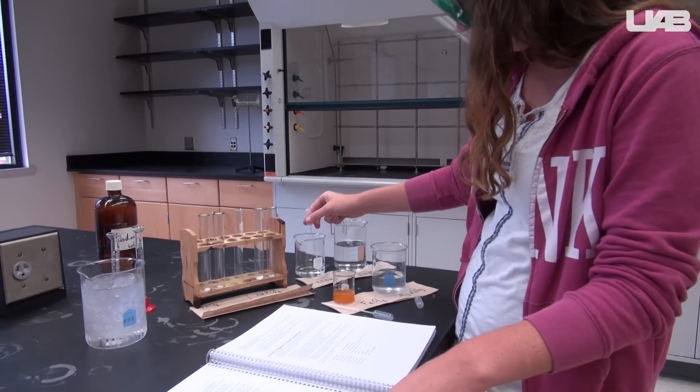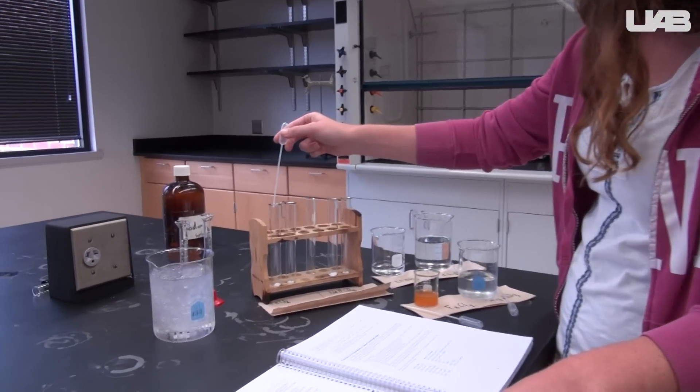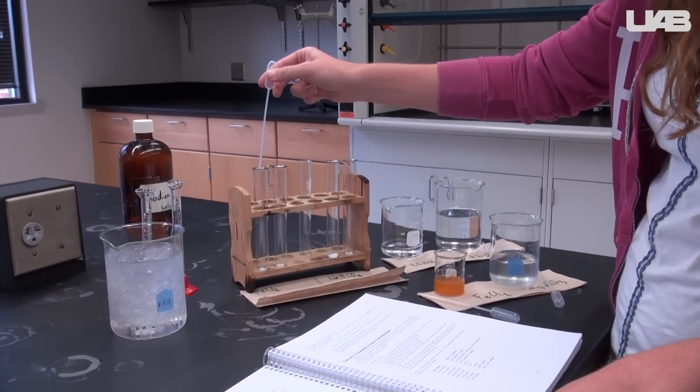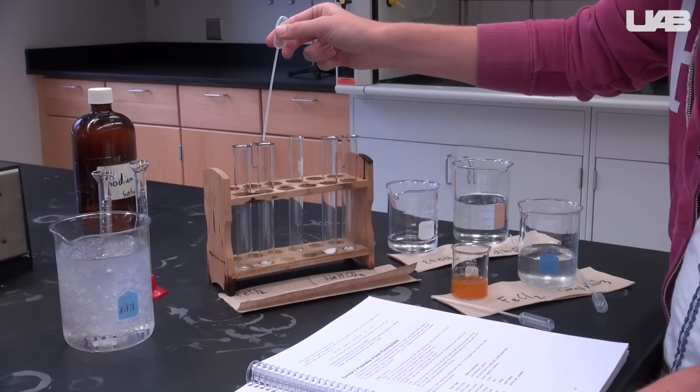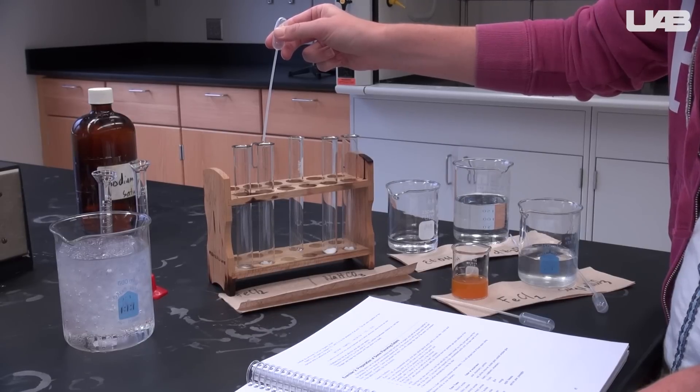For these tests, you will need a total of four test tubes. For each test, you will place less than 0.25 grams of your aspirin in one test tube and less than 0.25 grams of the stock aspirin in the other test tube.